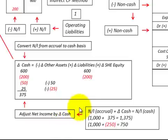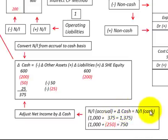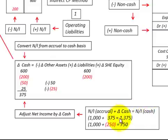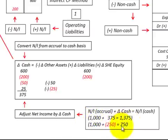To convert net income from the accrual to the cash basis, we use the formula: accrual net income plus the change in cash equals net income on a cash basis. For example, if our accrual net income was $1,000 and our change in cash was a positive $375, we'd add that to get cash basis net income of $1,375. In the case where our change in cash was a negative amount, we'd subtract that, arriving at a cash basis net income of $750.